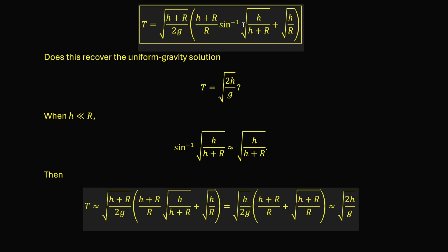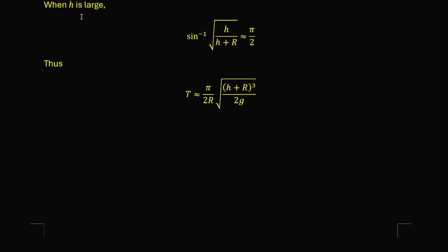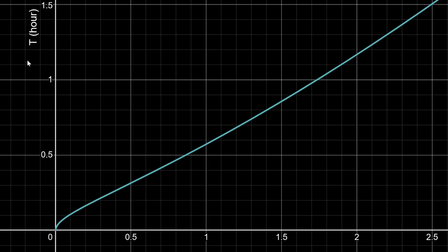Now let's think about what happens when h is large. The argument of the inverse sine function will be approximately 1, so the inverse sine term is approximately π/2. The second term in the bracket, which is √(h/r), would be much smaller than the first term — roughly linear in h+r over r. Therefore, when h is large, T is approximately proportional to the three-halves power of (h + r).